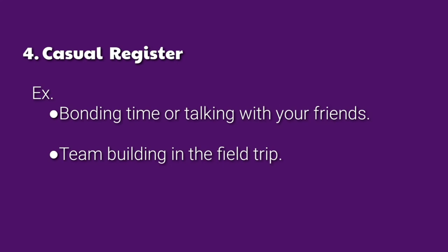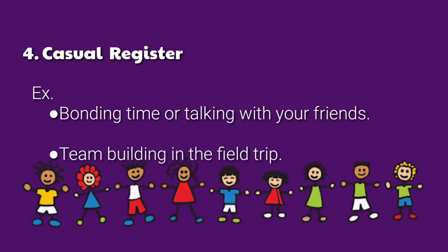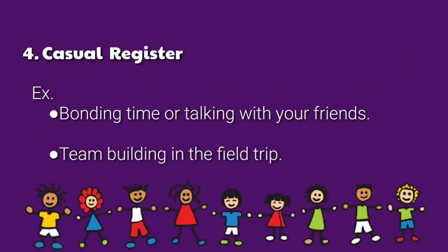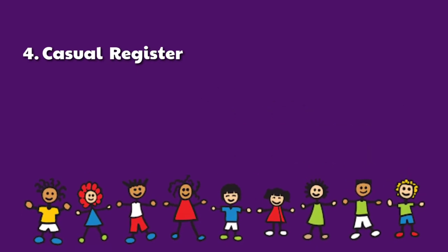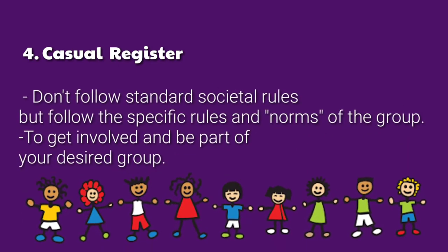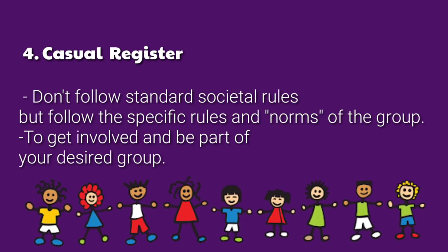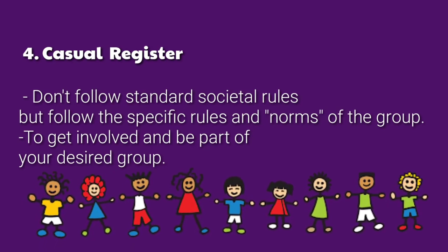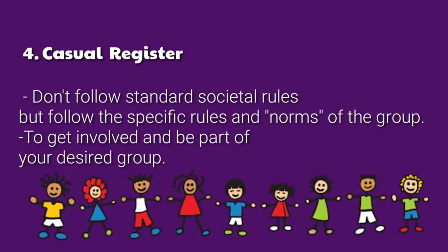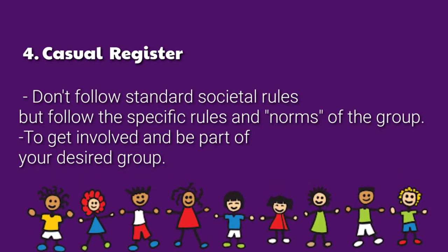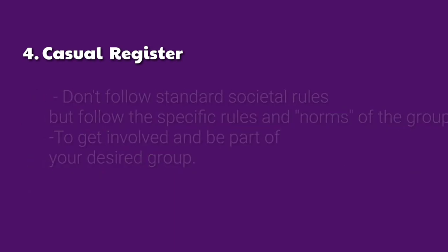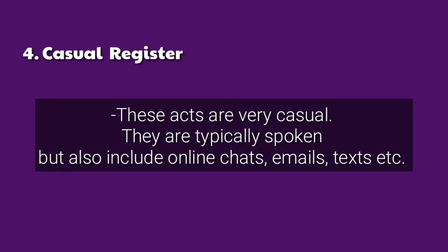Casual register. Bonding time or talking with your friends, team building — these are examples of casual register. Different from the first three registers, casual register doesn't follow standard societal rules, but follows the specific rules and norms of the group, in order to get involved and be part of your desired group. These acts are very casual. They are typically spoken, but also include online chats, emails, texts, etc.